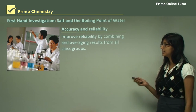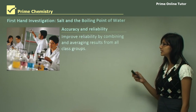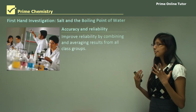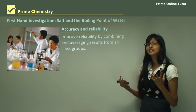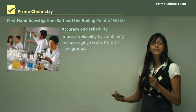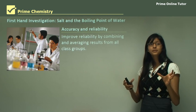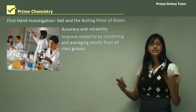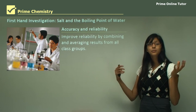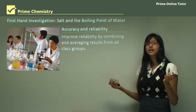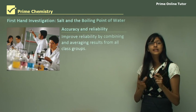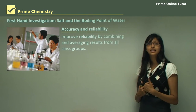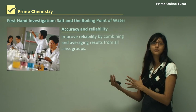You can improve reliability by combining and averaging results from all class groups. During class time you may not have enough time to repeat an experiment five times, but if you separate into five different groups each conducting the same experiment, that is the same as repeating it five times. If all groups receive the same results, the experiment and the method are valid.